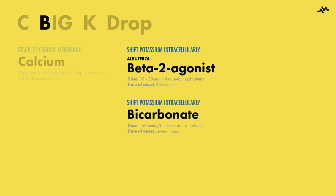B stands for beta-adrenergic agonists and bicarbonate. Both of these therapies lead to shifts of potassium intracellularly. Albuterol can be given as a nebulized solution or intravenously, with onset of action varying from 30 minutes with intravenous infusion and up to 90 minutes with nebulized albuterol.